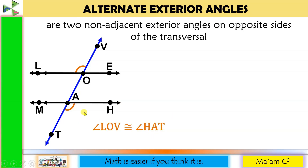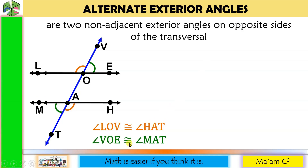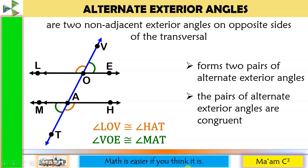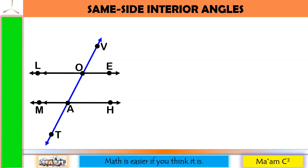Let's have another pair. Let's get an angle on the right side and its alternate is on the left side. Parallel lines cut by a transversal form two pairs of alternate exterior angles, and these alternate exterior angles are also congruent. The third one is same-side interior angles.